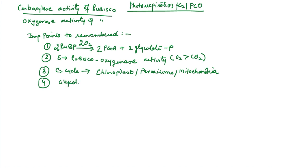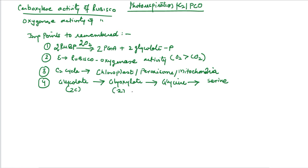Fourth important point: glycolate will change into glycine, and glycine is finally converted into serine. Glyoxalate is a two-carbon compound, glycine is a two-carbon compound, and serine is a three-carbon compound. That's why we take two molecules of glycine — two molecules of glycolate give two molecules of glycine, which then give one molecule of serine, releasing one carbon as CO2.